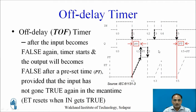After the input becomes false — at t1, t3, and t5 — the timer starts and output will become false after preset time PT, provided that the input has not gone true again in the meantime. At time instant t3, input changes from 1 to 0, and at t4 input again changes from 0 to 1.